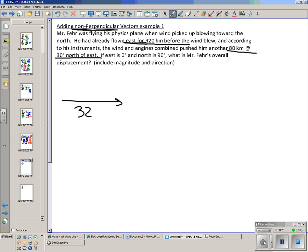So 320 kilometers this way and then it's about 80 kilometers at an angle of 30 degrees. Now if we notice this kind of looks like a right triangle.